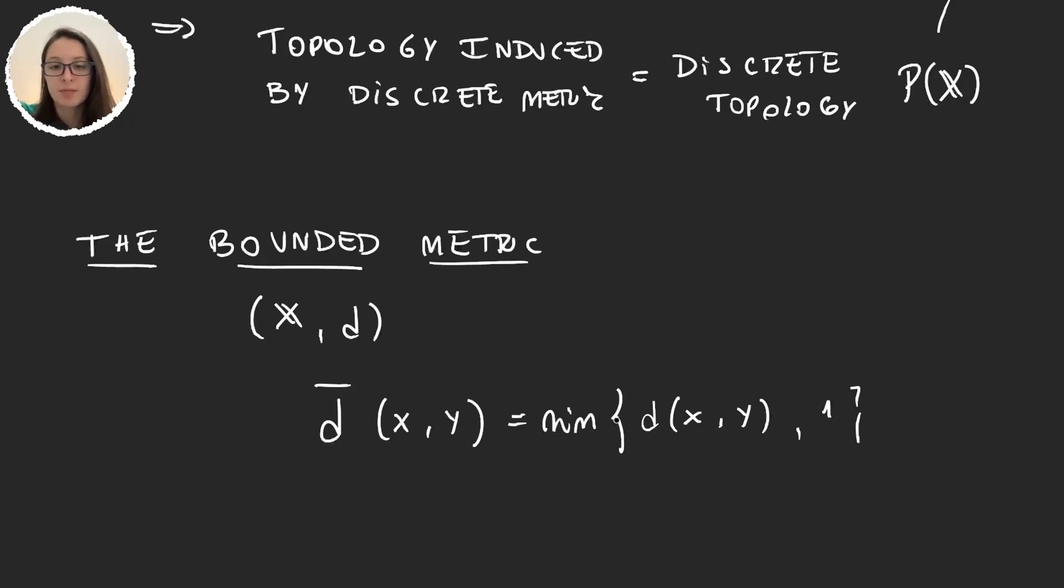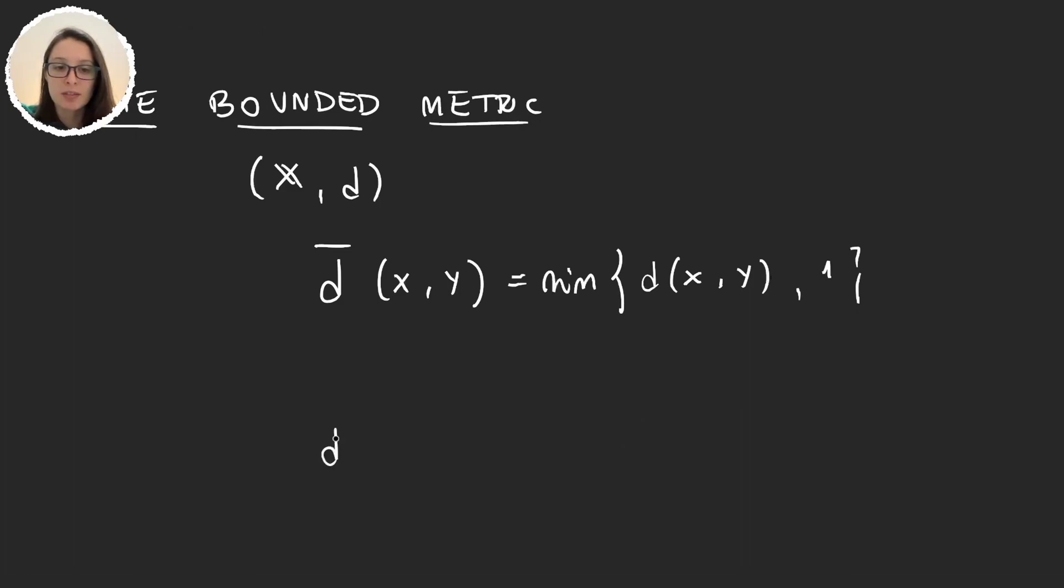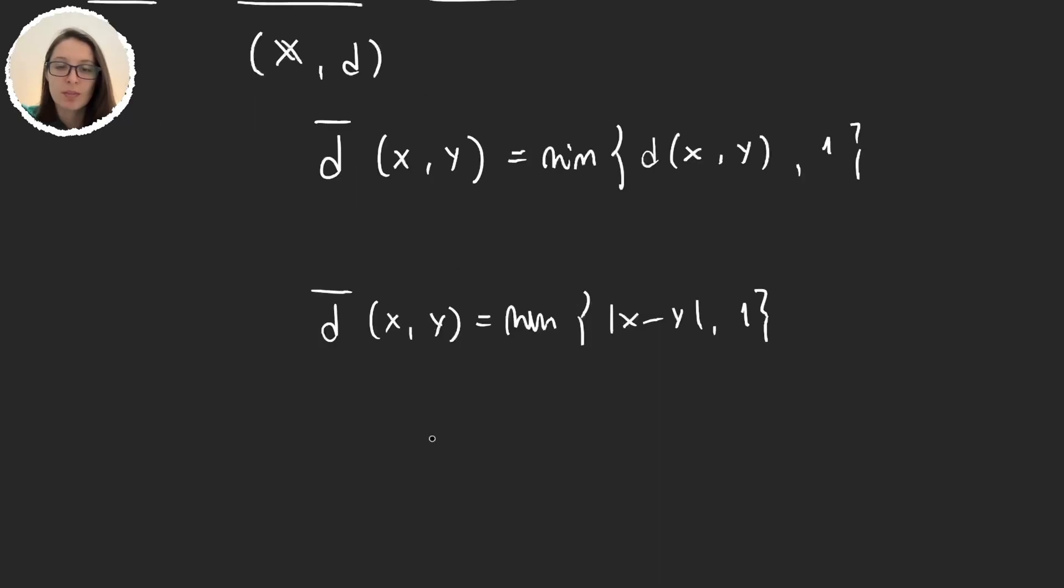So what happens is if we think about the real line, so let's think about this metric. The balls for this metric are going to be given some element x, very small balls, because at first we're going to have that this number is the minimum. And as soon as I hit distance 1, so I will have here the ball of radius 1, in which case these two are the same. And then as soon as this one is greater than 1, this one will win. And then we just get all the space.